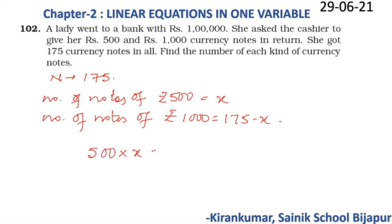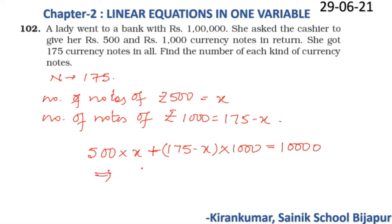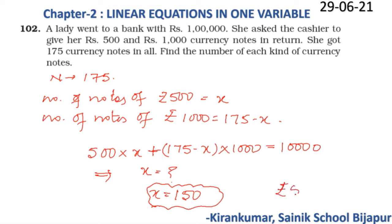500x gives the amount from ₹500 notes, and 1000 × (175 − x) gives the amount from ₹1000 notes. The total is ₹1,00,000. This simple equation gives x = 150. So there were 150 notes of ₹500 and 25 notes of ₹1000. Try it out!